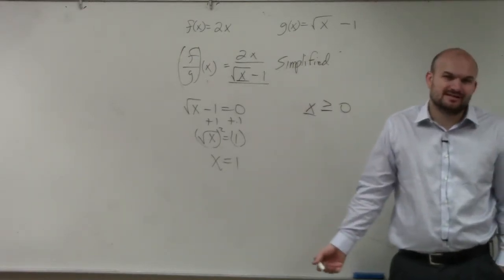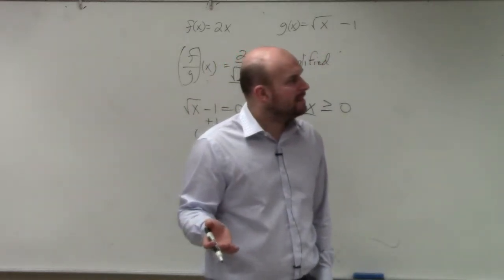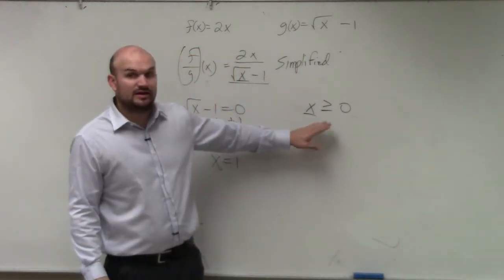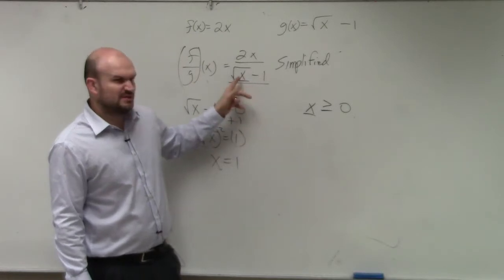But it cannot equal 1. So it's kind of an odd way to write this. I'm going to show you guys how we would write this in pre-calculus. So we know that all values can be greater than or equal to 0. Can it equal 0? Yes, because what's the square root of 0?